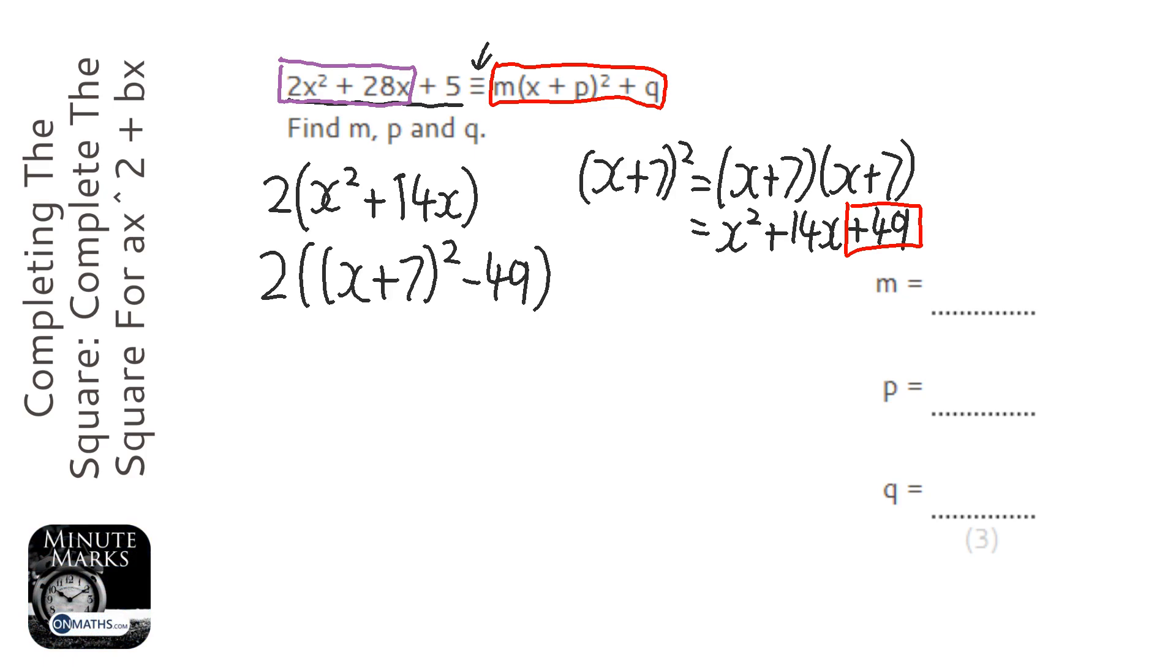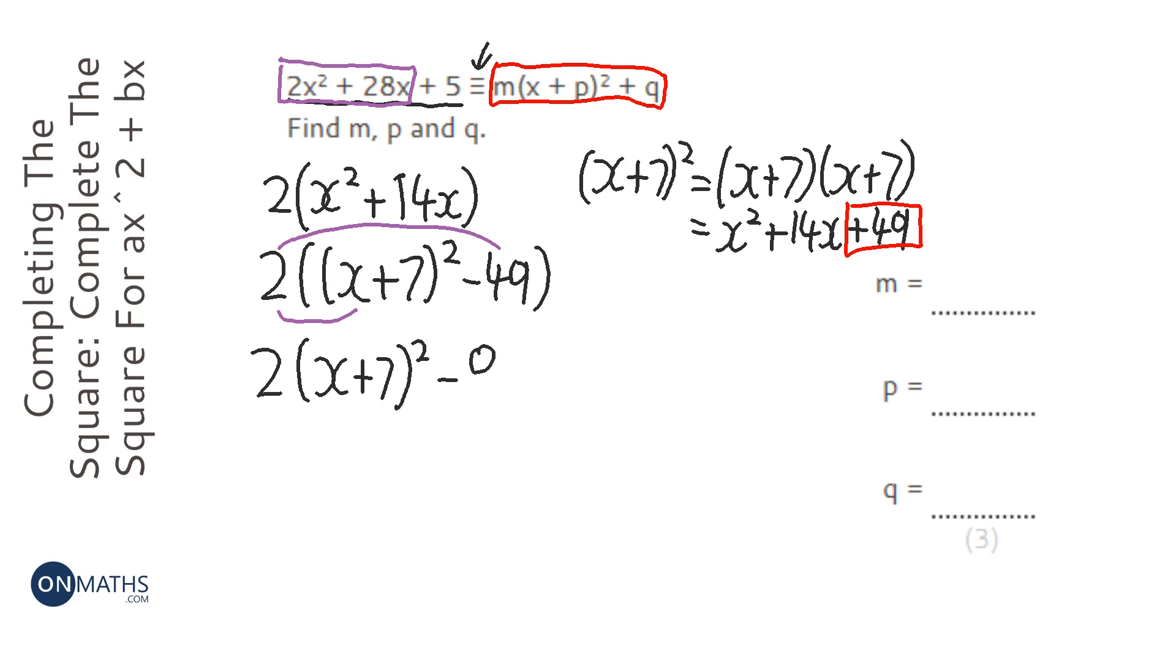So let's have a look. That all looks fine, but what I can do is now expand that. So I can times the 2 by the bracket there and times the 2 by the minus 49 there. So I end up with 2 bracket x plus 7 squared minus, and then 2 times 49, which is 98.